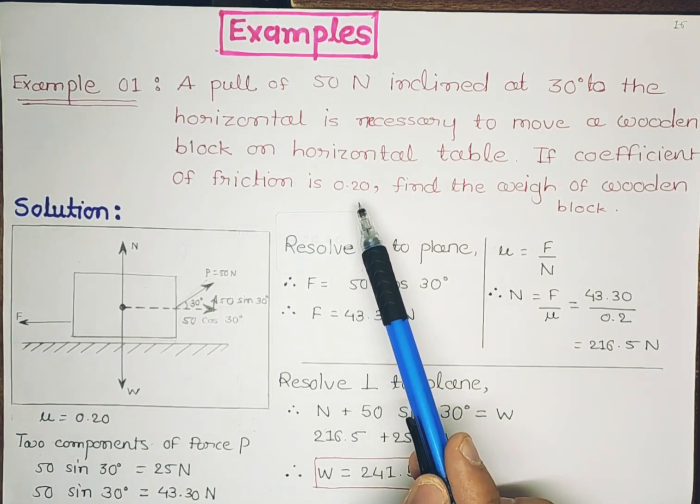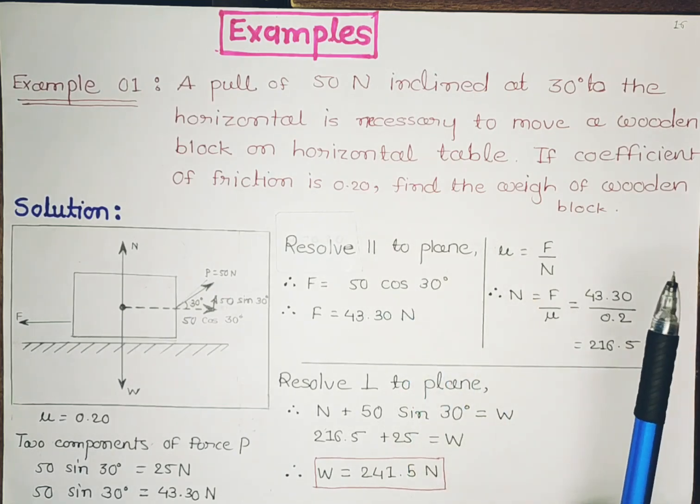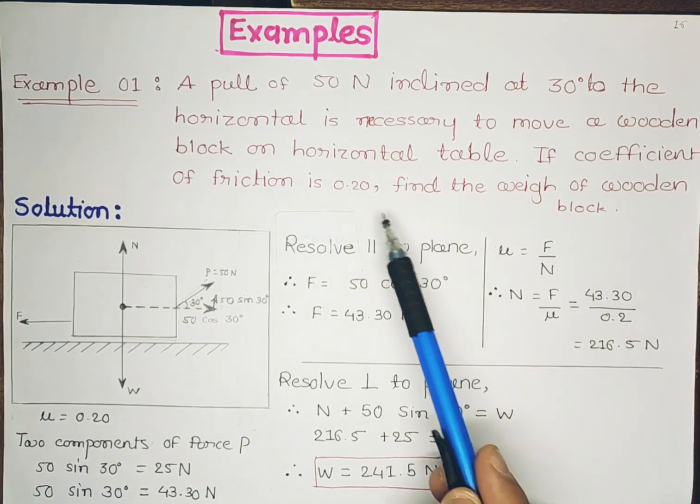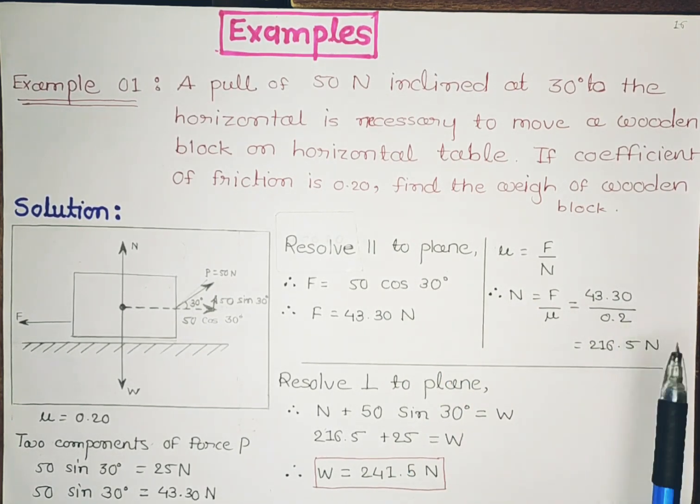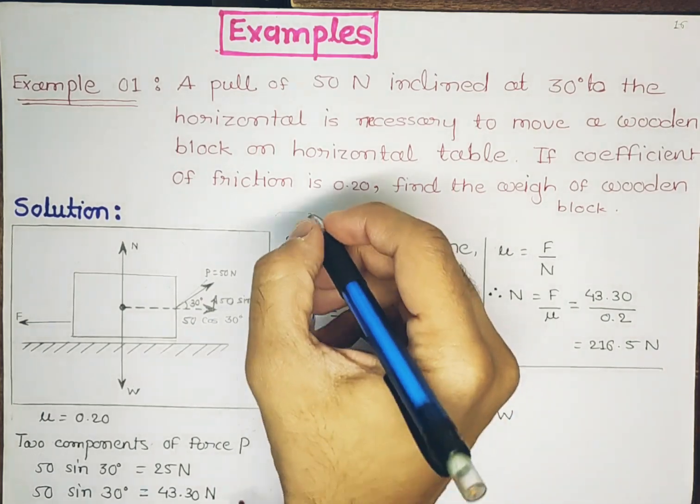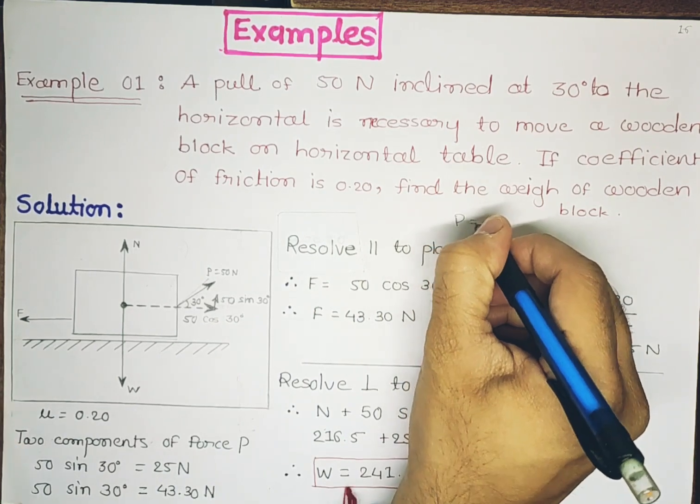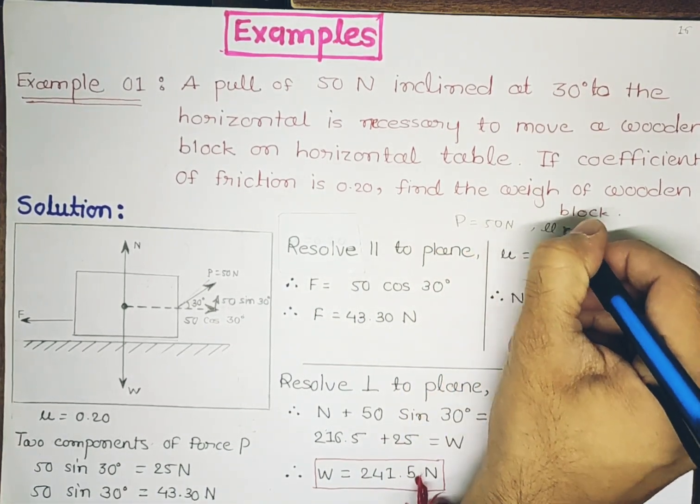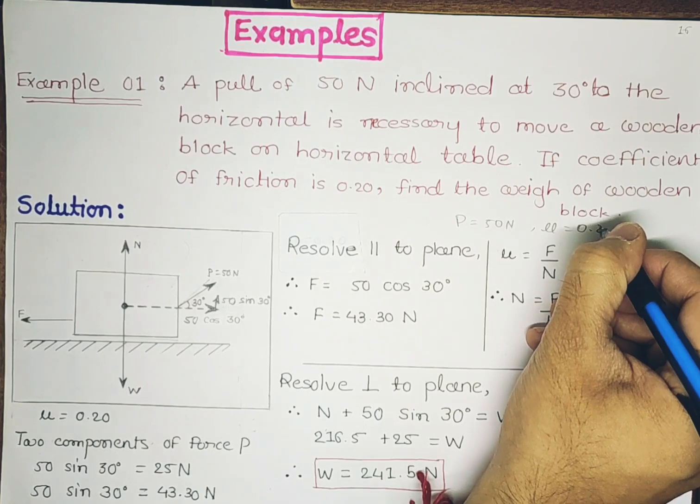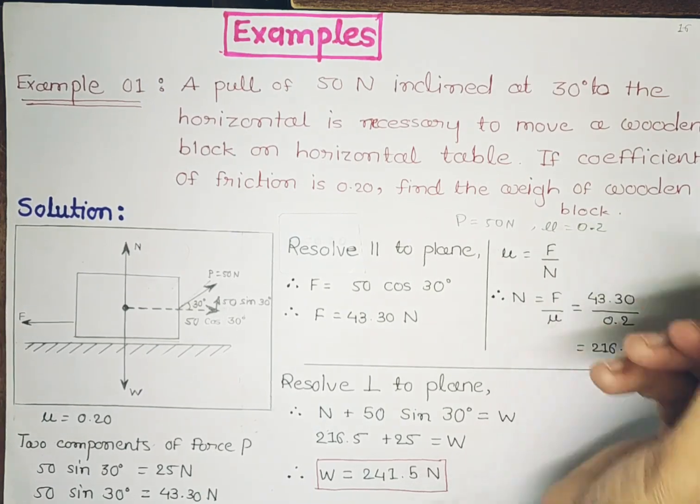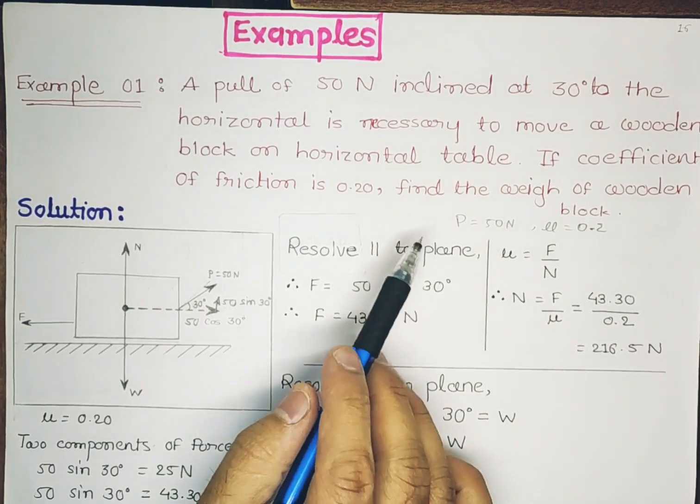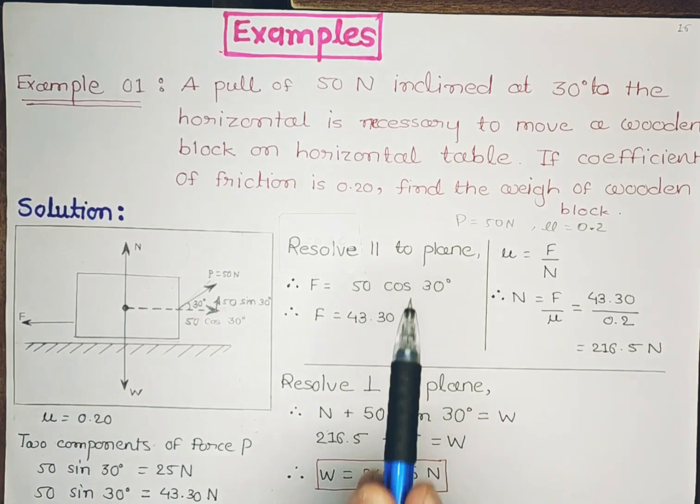If the coefficient of friction is 0.2, so coefficient of friction μ, the value of μ given here is 0.2. If we prepare data then P is equal to 50 Newton and μ is equal to 0.2. There is no unit because μ is constant, that is coefficient of friction.